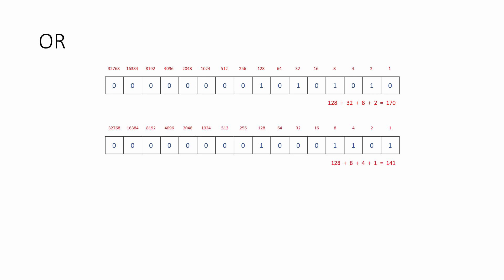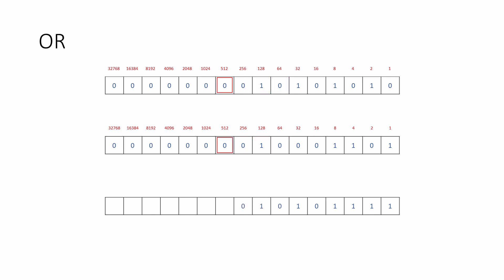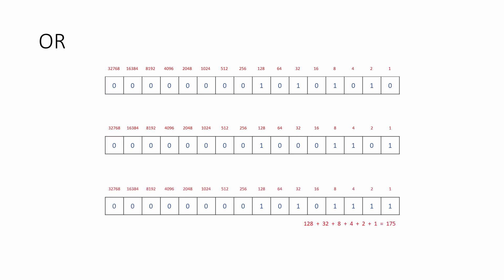When the OR operator is applied, corresponding pairs of bits are compared. If one OR the other of a pair is a 1, the output is 1. If both bits of a pair are 1, this also produces an output of 1. Looking at the place values of the result, you can see that this is 175 in denary.